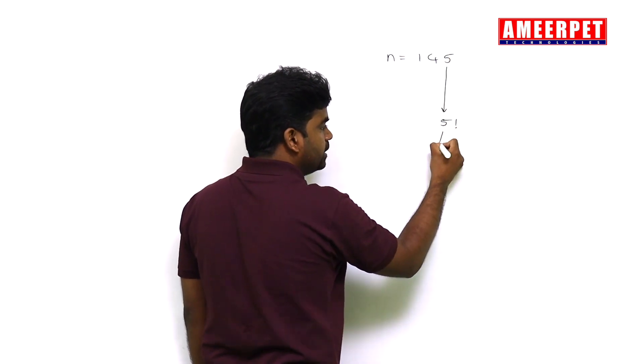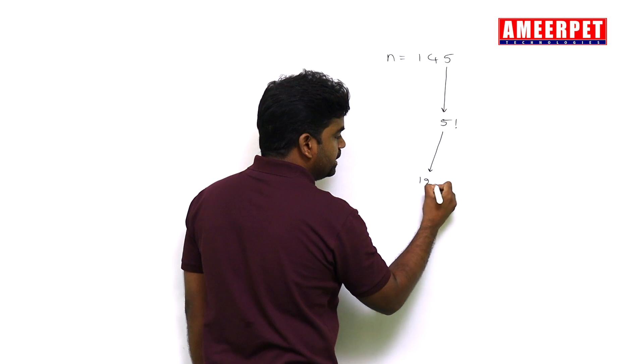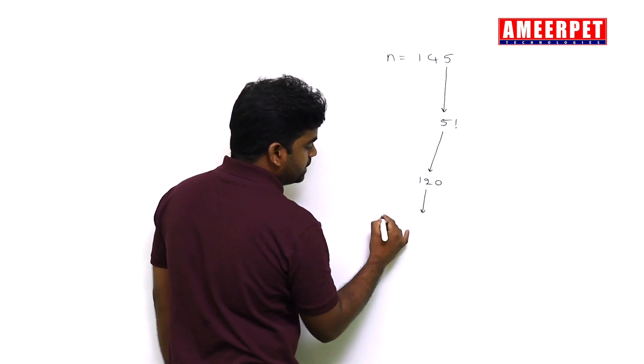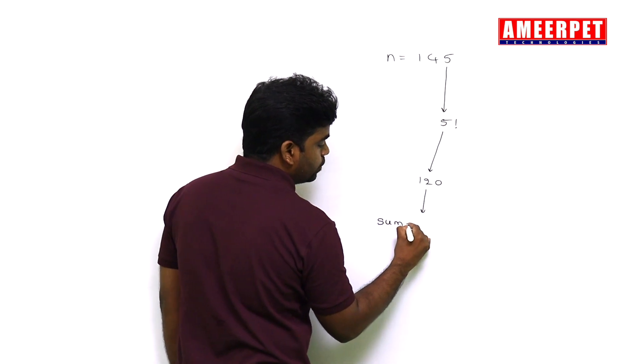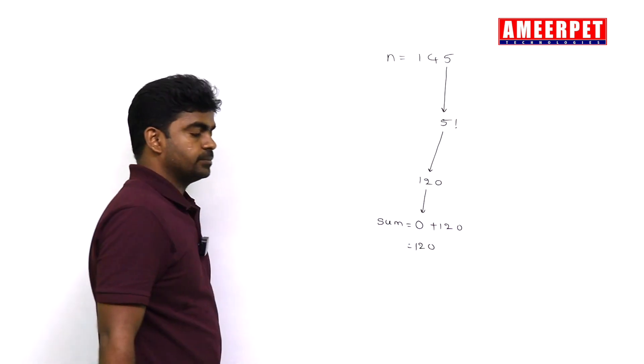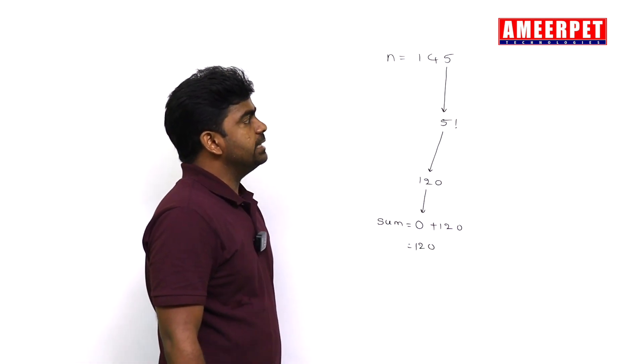That 120 is adding to the sum. Initially I am taking the sum value as zero. Zero plus 120, the value becomes 120. After that, remove the digit after working with that one.